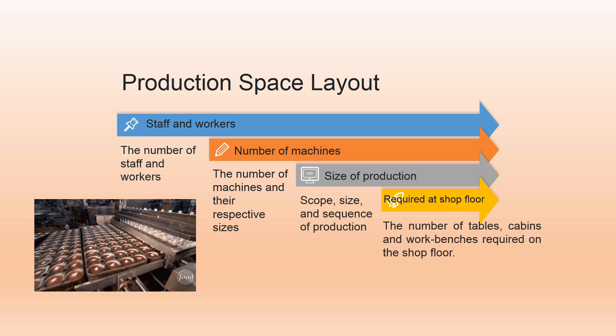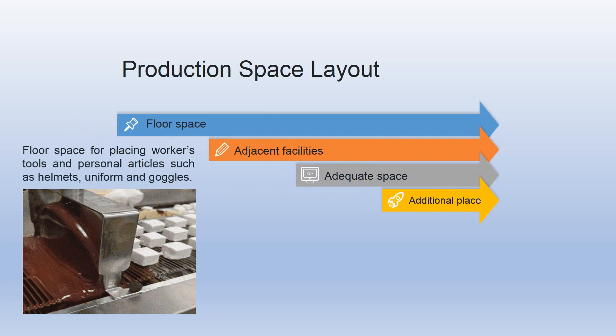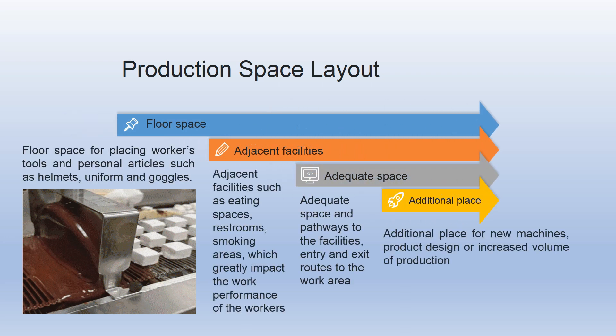Key shop floor design considerations include: the number of staff and workers; the number of machines and their respective sizes; the scope, size, and sequence of production; the number of tables, cabins, and workbenches required; floor space for placing workers' tools and personal articles such as helmets, uniforms, and goggles; adjacent facilities such as eating spaces, restrooms, and smoking areas, which greatly impact worker performance; adequate space and pathways to facilities; and entry and exit routes to the work area, plus additional space for new machines or increased production volume.